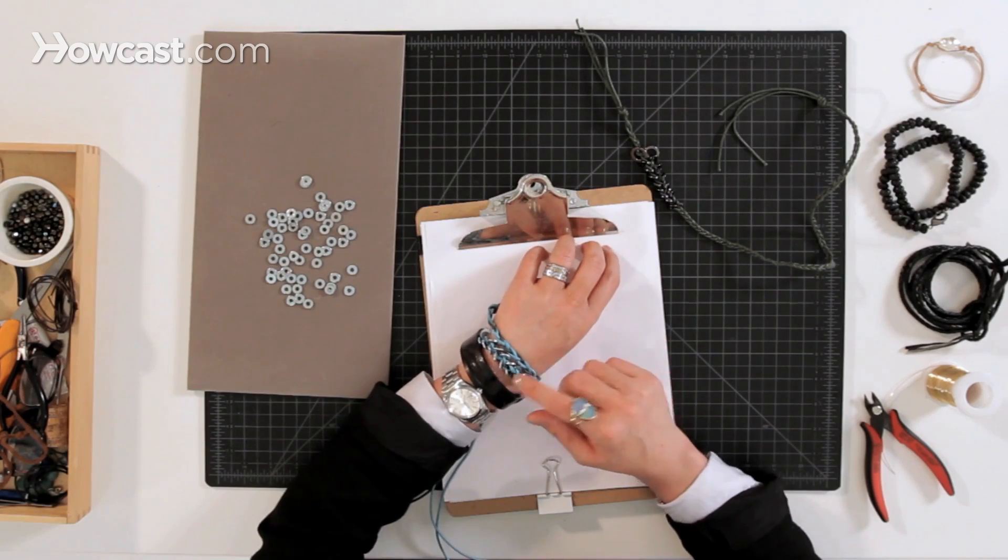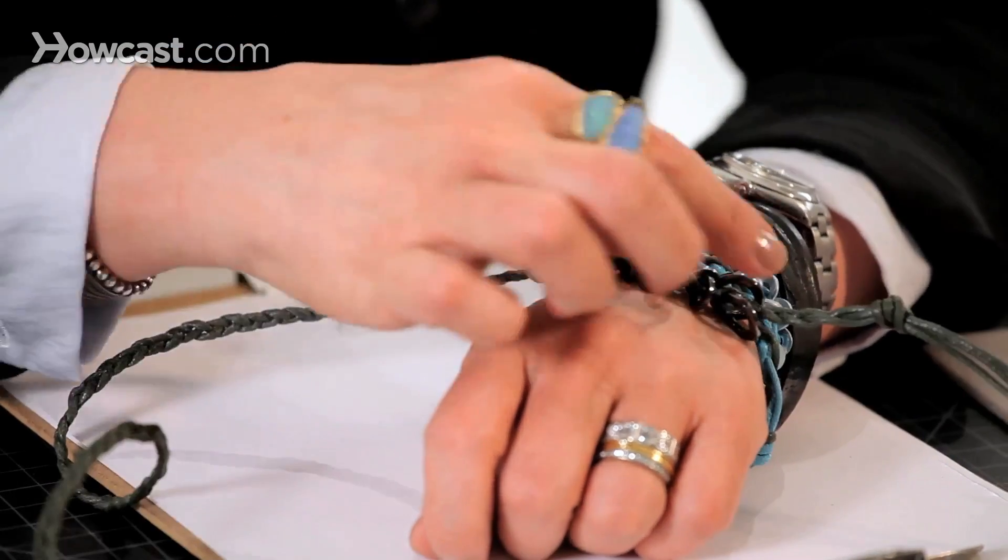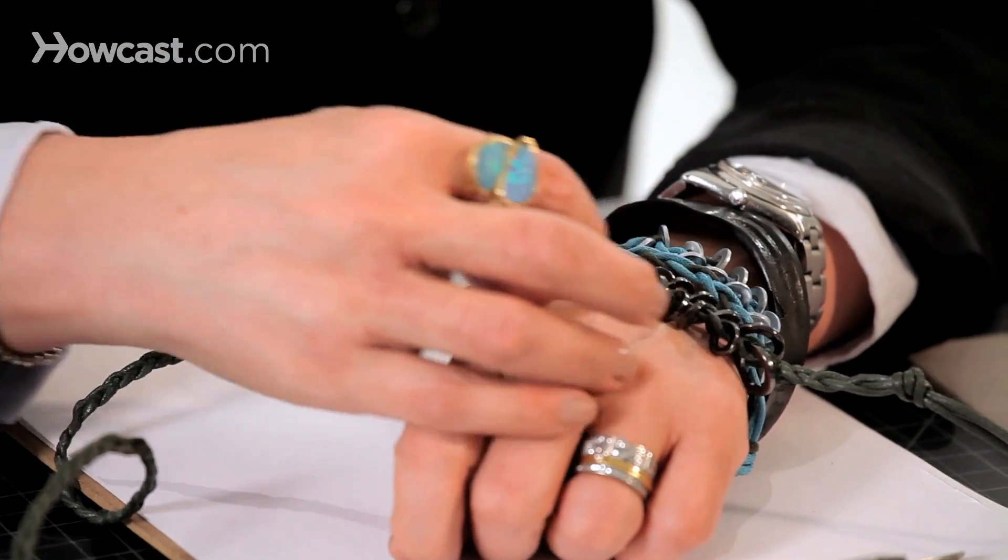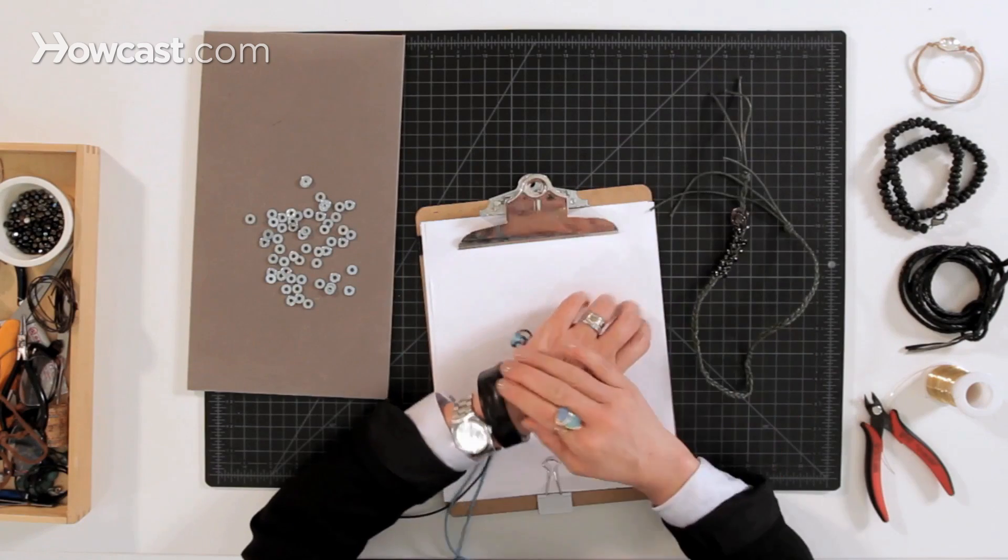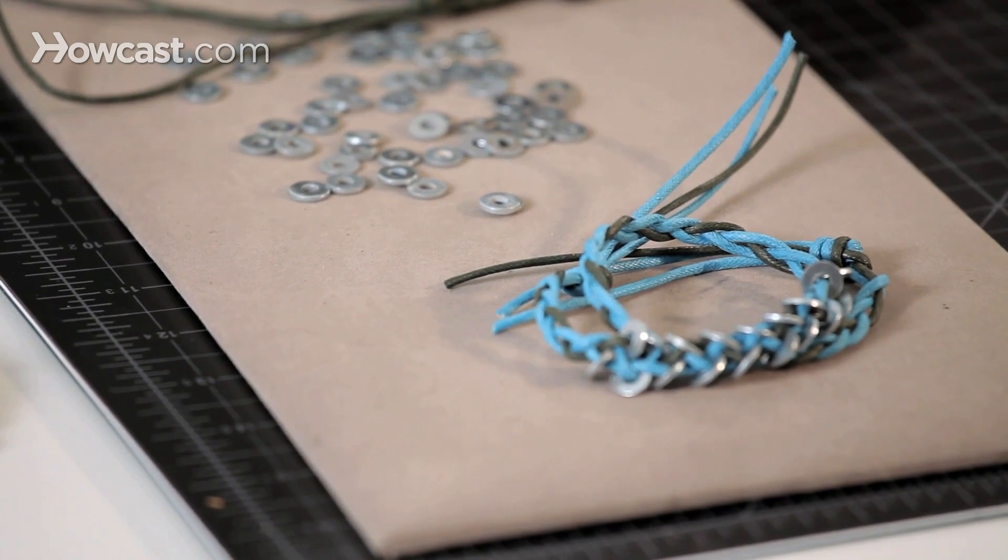Could use three different color cords, all the same color cord, so it looks like this. This one I did graduated jump rings, so they're large, medium to small, or all the same size. And then we'll see you next time. Bye.